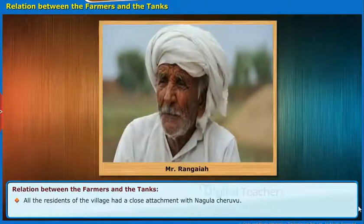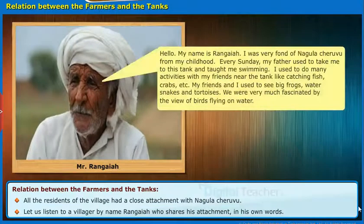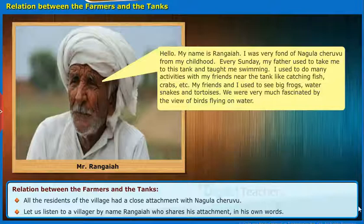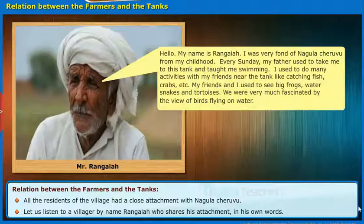All the residents of the village had a close attachment with Nagula Chiruvu. Let us listen to a villager named Rangaya who shares his attachment in his own words. Hello, my name is Rangaya. I was very fond of Nagula Chiruvu from my childhood. Every Sunday, my father used to take me to this tank and taught me swimming. I used to do many activities with my friends near the tank, like catching fish, crabs, etc. My friends and I used to see big frogs, water snakes and tortoises. We were very much fascinated by the view of birds flying on water.